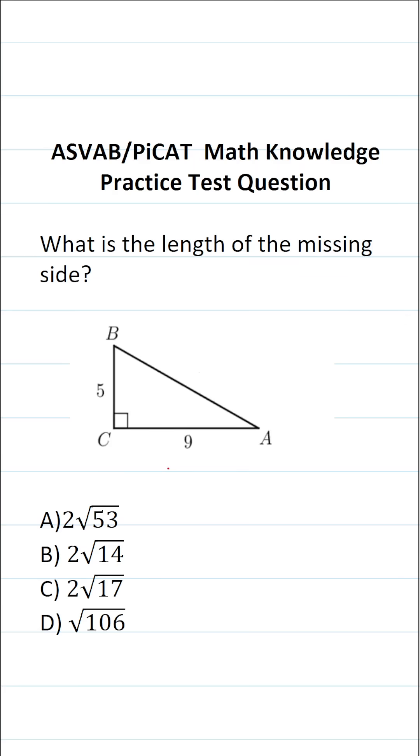This math knowledge practice test question for the ASVAB and PiCAT says, what is the length of the missing side? As you can see, we have a right triangle that has legs of five and nine, and the missing side is the hypotenuse of the right triangle.